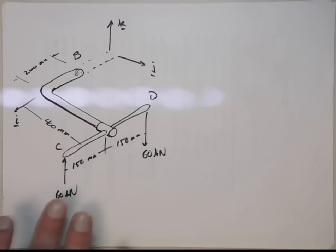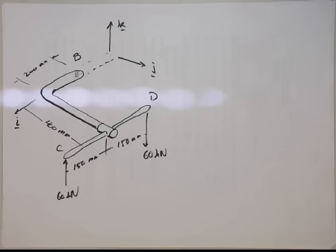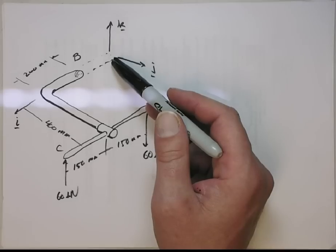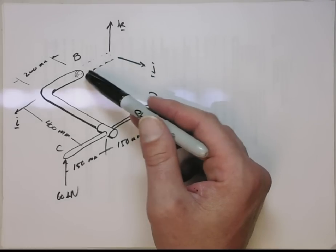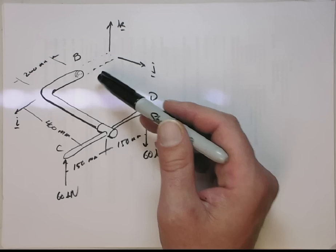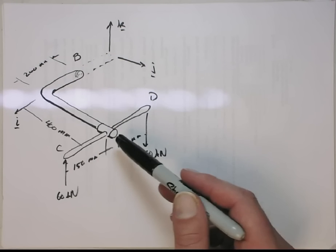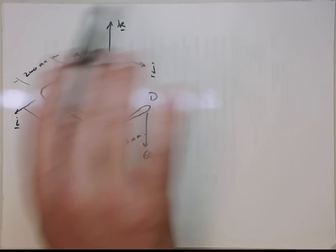So, again, to do this, you can choose whatever free-body diagram you wish. You could do it on the whole structure and get the reaction forces at A and then work on this section. But let's look at the section cut from B down to the handle side, and then we don't have to worry about the reactions at A.